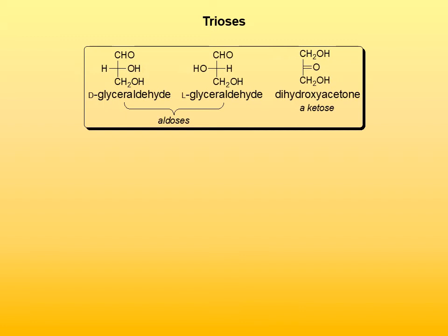Trioses have three carbon atoms. The two naturally occurring trioses are: the aldose D-glyceraldehyde, shown on the left — L-glyceraldehyde is unnatural — and dihydroxyacetone, which is a ketose, so it is a ketotriose, and is also a naturally occurring carbohydrate. They don't have much biological importance, but they are interesting because D- and L-glyceraldehyde formed the basis for the original Fischer-Rosanoff convention — other monosaccharides and organic compounds are classified as D or L based on their relationship to D- and L-glyceraldehyde. Dihydroxyacetone is also interesting because it is a constituent of self-tanning lotions; it reacts with skin proteins to give dark products, mimicking the tanning process without exposure to UV light.